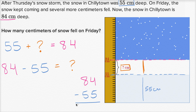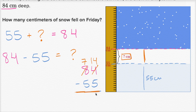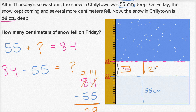So we have 84 minus 55, and that's going to equal our question mark. Looking at the ones place: we have four ones minus five ones. Since four is less than five, let's regroup — take a 10 from the tens place, so instead of eight tens we have seven tens, and turn that 10 into 10 ones. 10 plus 4 is 14. Now: 14 ones minus 5 ones is 9 ones. Seven tens minus five tens is two tens. So our mystery amount of snow is 29 centimeters.